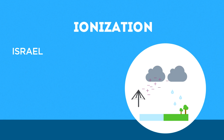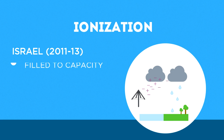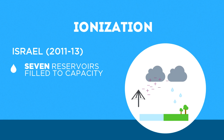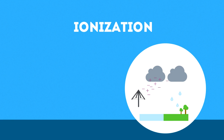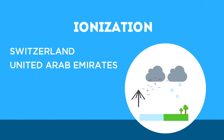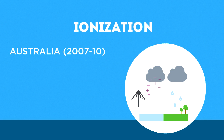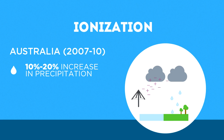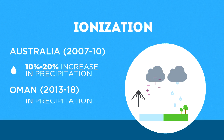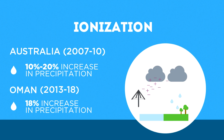In Israel, operations from 2011 to 2013 filled seven reservoirs to their full capacity for the first time in the 40-year operation of the reservoirs. A second version of atmospheric ionization technology was developed in Switzerland and was then utilized in the United Arab Emirates. Trials in Australia from 2007 to 2010 consistently increased precipitation between 10 and 20 percent, and a five-year trial program in Oman, starting in 2013, increased precipitation by 18 percent during the first two years of operation.